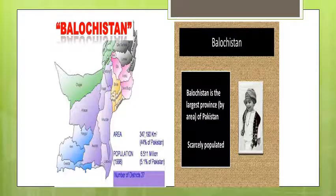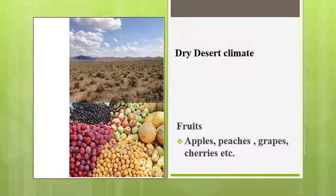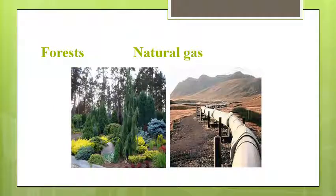Now let's have a look at the province of Balochistan. The capital of Balochistan is Quetta, which is also its largest city. It has an extremely dry desert climate with very little vegetation. However, fruit trees like apple, peach, grapes, cherry, almonds, and plums grow very well in some areas. Juniper, alpine, and coniferous forests grow here as well. Balochistan has vast natural resources, especially natural gas, which is supplied to the rest of the country.